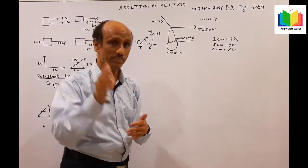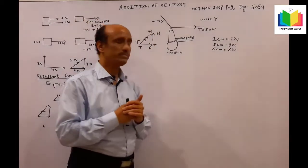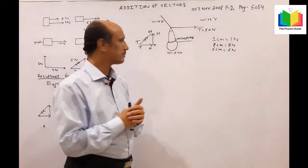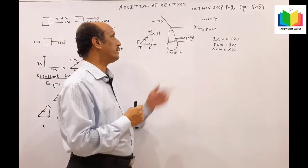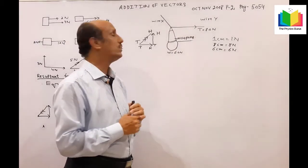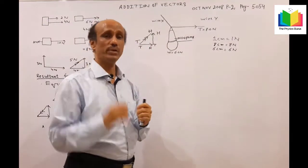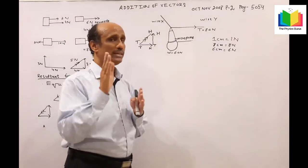A microphone is held with two wires. The weight of the microphone is 6 Newtons while the force of tension in wire Y is 8 Newtons. We are required to calculate the force exerted on wire X.